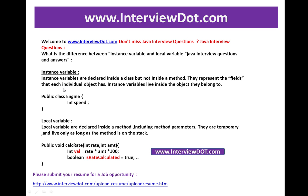Instance variables live inside the object they belong to. For example: public class Engine { int speed; } — here, 'speed' is the instance variable. Whereas local variables are declared inside a method.